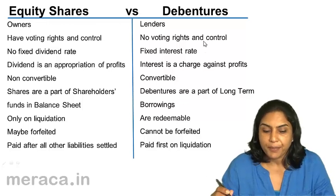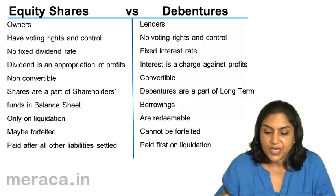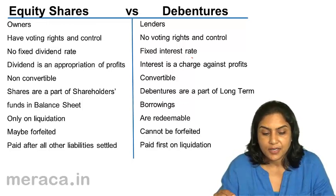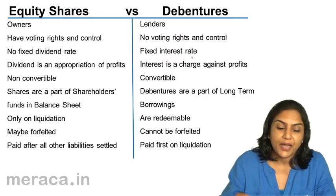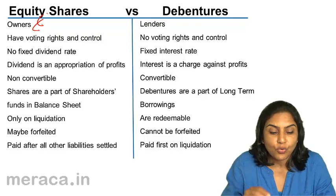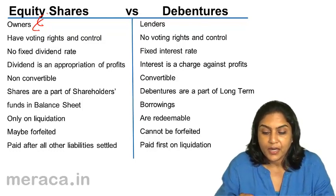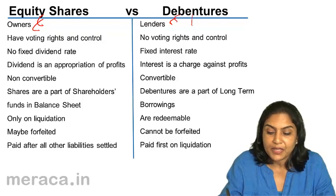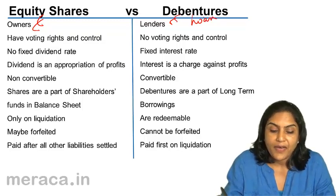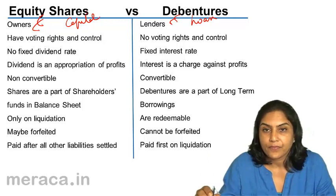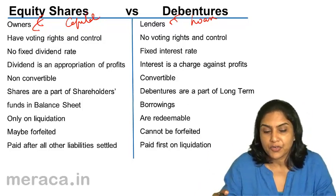Let us compare equity shares and debentures. Equity shares are held by the owners of the company — they are the shareholders or owners. Debentures are held by lenders of the company. This is a loan, and equity is capital. That is the fundamental difference.